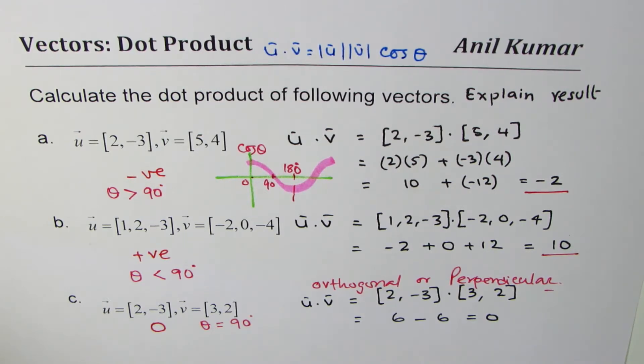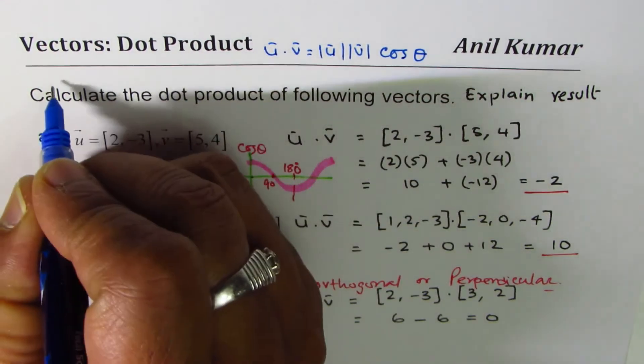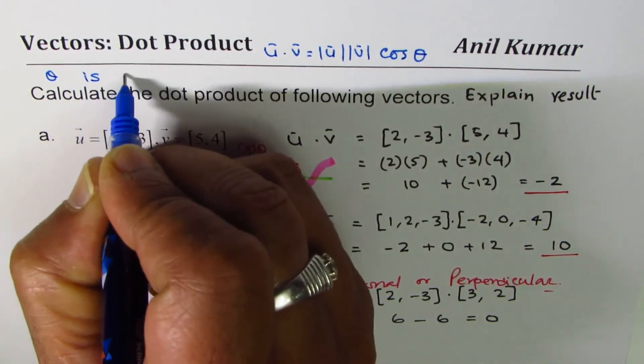If it is negative, it really means that the angle between the two vectors is greater than 90 degrees. If it is positive, the angle between the two vectors when placed tail to tail... let me write down this. So theta is angle when vectors are placed tail to tail.